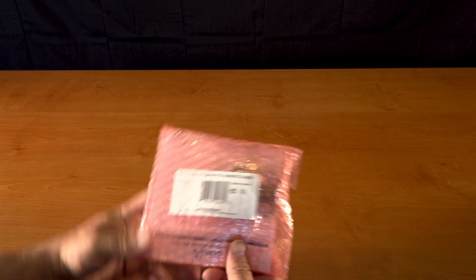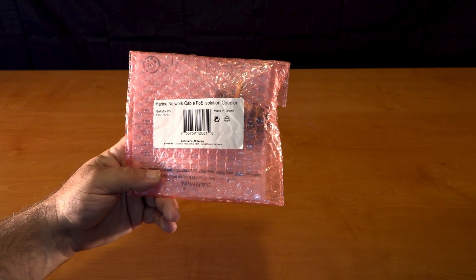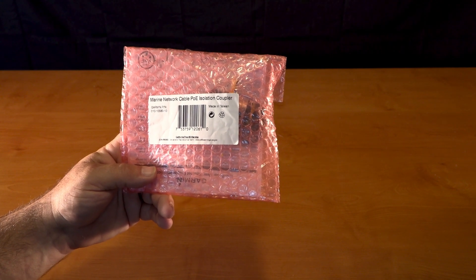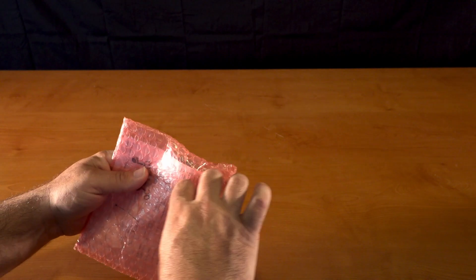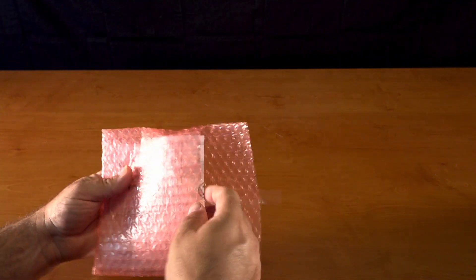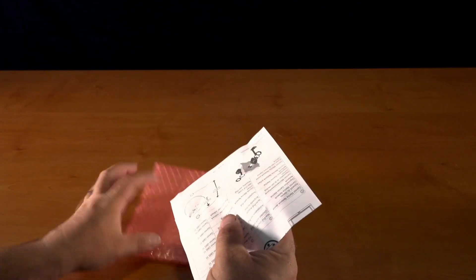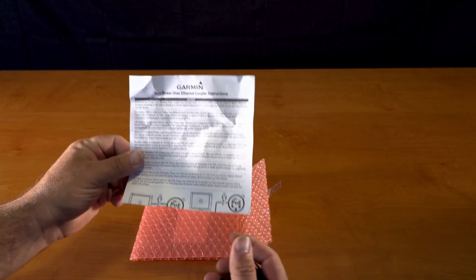Hey guys, we're doing an unboxing on the Garmin Marine Network Cable POE isolation coupler. We'll be installing a FLIR system on a boat with a Garmin setup and we'll be using this isolation switch.